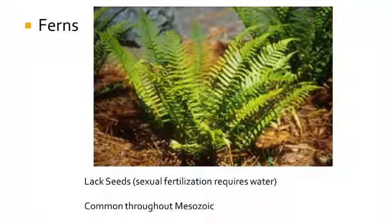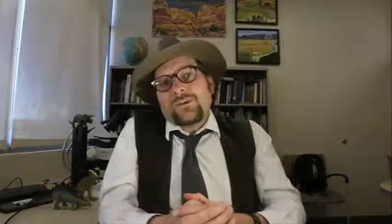The next common undergrowth plants are the ferns, which are very diverse today and grow in wet rainy regions as well. This is because they too require water for fertilization. Not all plants during the Mesozoic required water for fertilization.